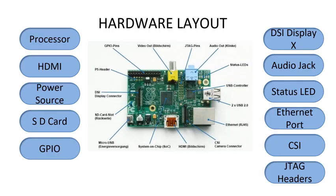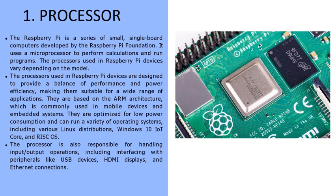This is the hardware layout of the Raspberry Pi, which includes a processor, HDMI, power source, SD card, GPIO, DSI display, audio jack, status LED, ethernet port, and CSI. First is the processor. The Raspberry Pi is a series of small single-board computers developed by the Raspberry Pi Foundation. It uses a microprocessor to perform calculations and run programs.